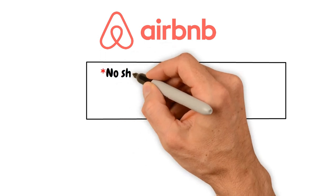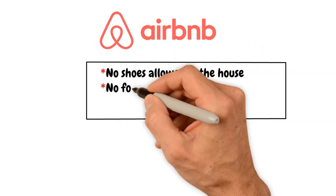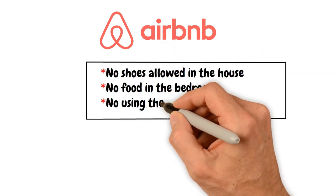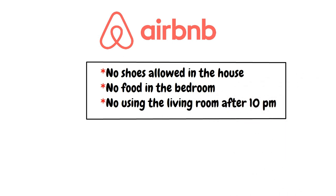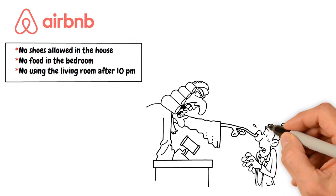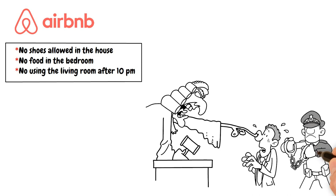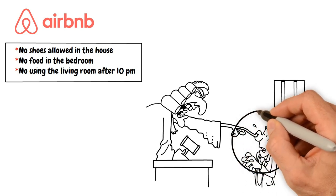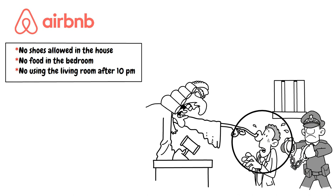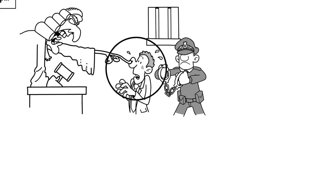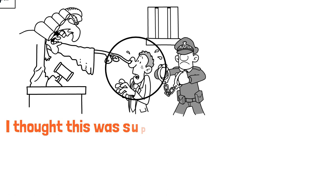The single worst aspect plaguing Airbnb is the ridiculous house rules. Like, no shoes allowed in the house, no food in the bedroom, no using the living room after 10pm. What is this? A prison or a vacation rental? It's like these hosts are trying to control every aspect of their guests' lives. They want to make sure you're following their rules to a T or they'll give you a bad review faster than you can say, I thought this was supposed to be a vacation.